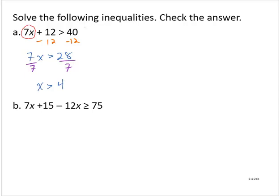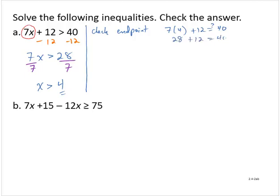Now to check the solution, we first check the endpoint. The endpoint is the value we found — in this case, 4. So if we substitute 4 for x, we should get a true statement for equality. Is 7 times 4 plus 12 equal to 40? 7 times 4 is 28, and 28 plus 12 equals 40. So that checks out — the endpoint works.